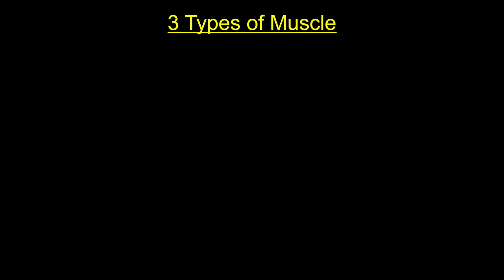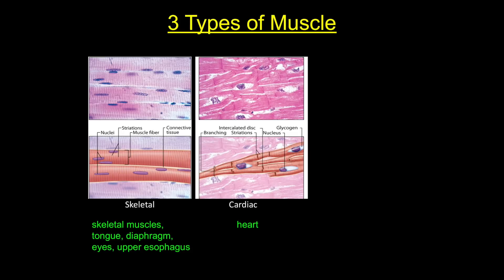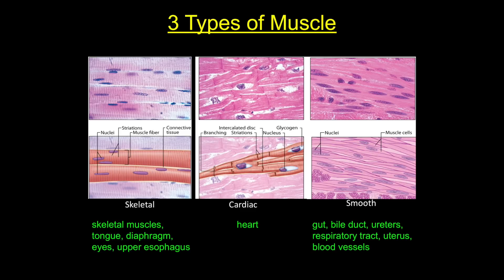There are two types of striated muscle. Skeletal muscle is found in our skeletal muscles, in the tongue, parts of the eye, and part of the esophagus. Cardiac muscle is found only in the heart. You can note that the muscle actually looks striped or striated, and you can see these striations under the light microscope. Smooth muscle, in contrast, is not striated, and it's found in the digestive system, the respiratory tract, and in blood vessels.